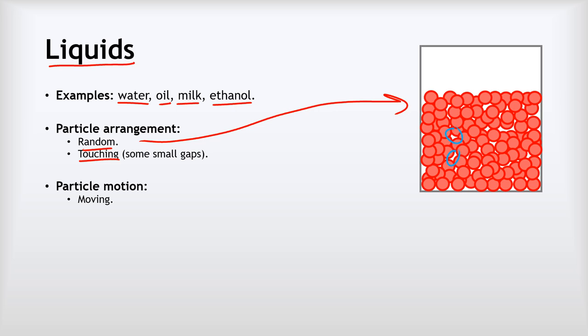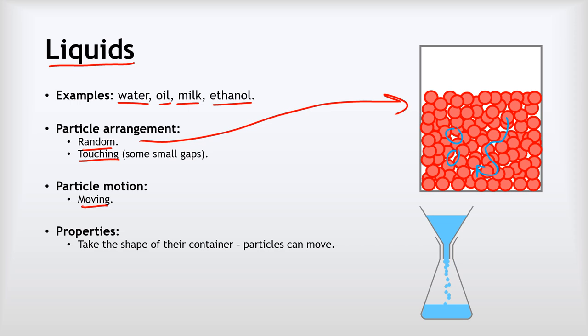The big difference with liquids is that the particles are moving — they're not just vibrating, but the particles are moving around all over the place, going on a continual never-ending little journey. This leads to the properties of liquids.